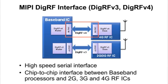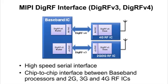DigRF V4 utilizes the MIPI M-PHY, which is the next-generation physical layer from the MIPI Alliance. The M-PHY achieves 1.5 Gbps per lane, enabling it to support existing and next-generation mobile broadband requirements. The DigRF interfaces allow designers to reduce pin count, improve EMI management and reliability, lower power, increase bandwidth, and enable interoperability between baseband processors and RFICs.